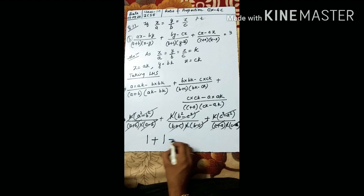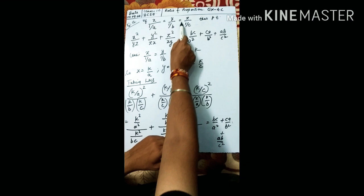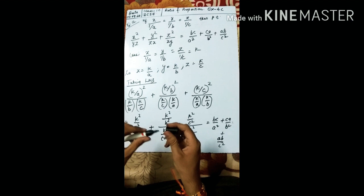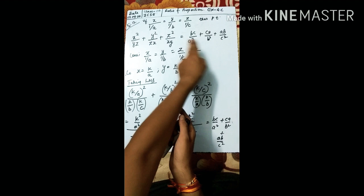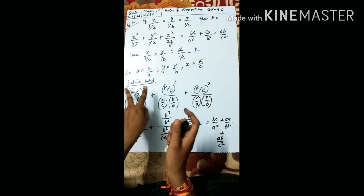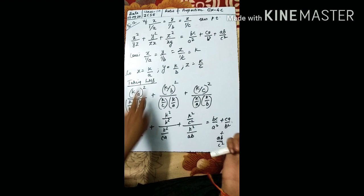Let us come to the 12th question. Given: x/(1/a) = y/(1/b) = z/(1/c). We need to prove a certain expression. Let this equal k, so x = k/a, y = k/b, z = k/c. Taking LHS, substituting x = k/a, y = k/b, z = k/c respectively in place of x, y, z.